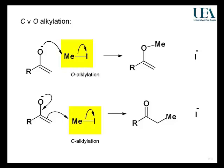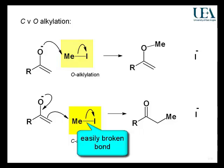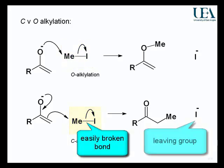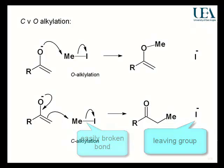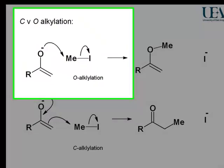So I pick methyl iodide. What you should remember about it is it has a reactive carbon-iodine bond. The carbon atom, although it's got four bonds, can act as an electrophilic centre because when it receives a pair of electrons from the nucleophile, it can lose the bonding to the iodine. The iodine is the leaving group.